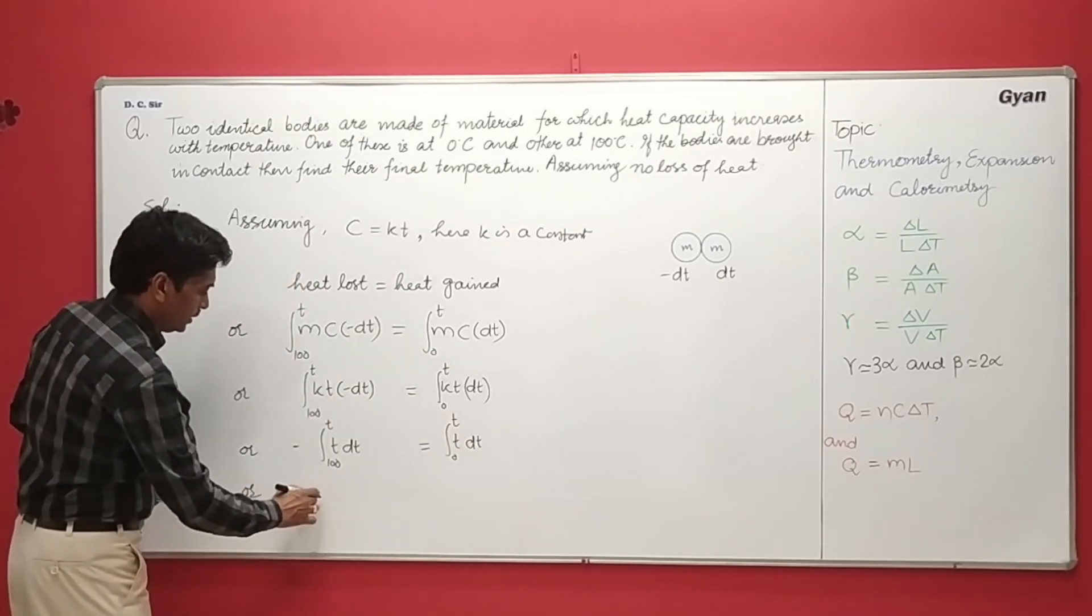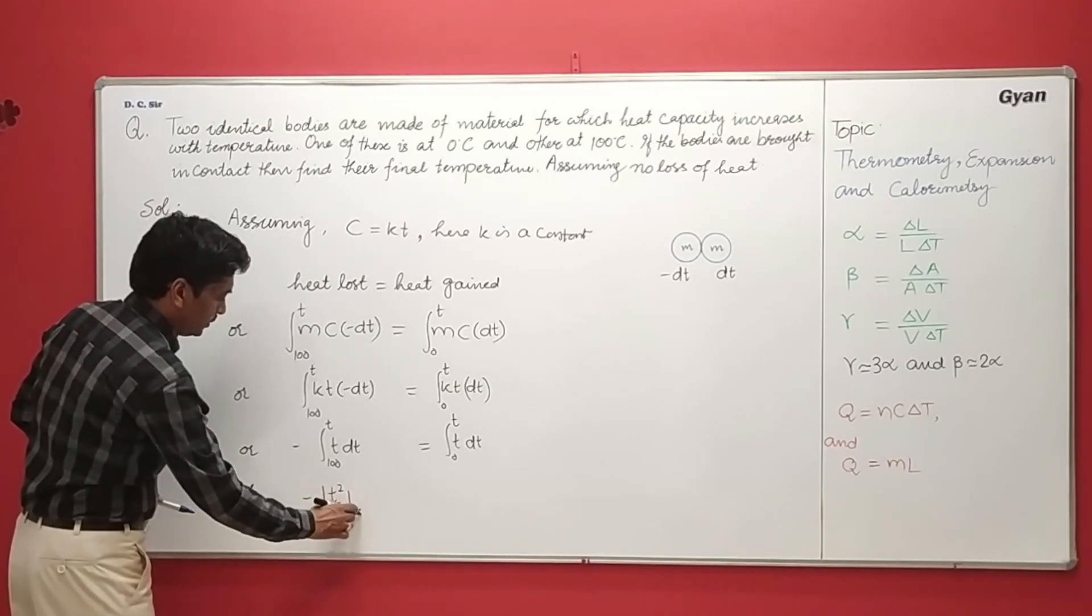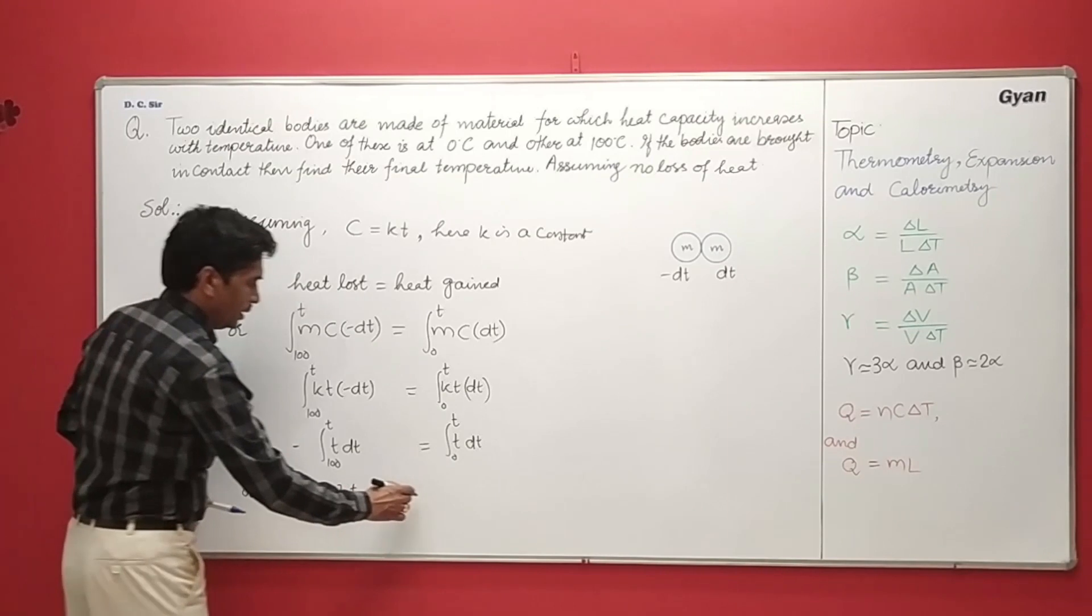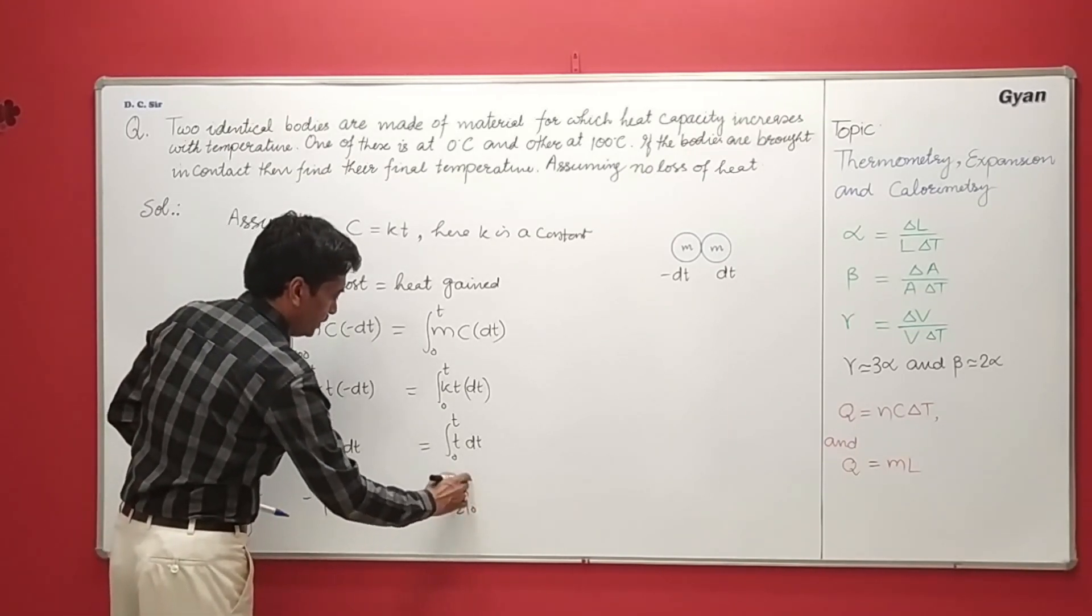Or, it is minus T square by 2 from 100 to T and here T square by 2 from 0 to T.